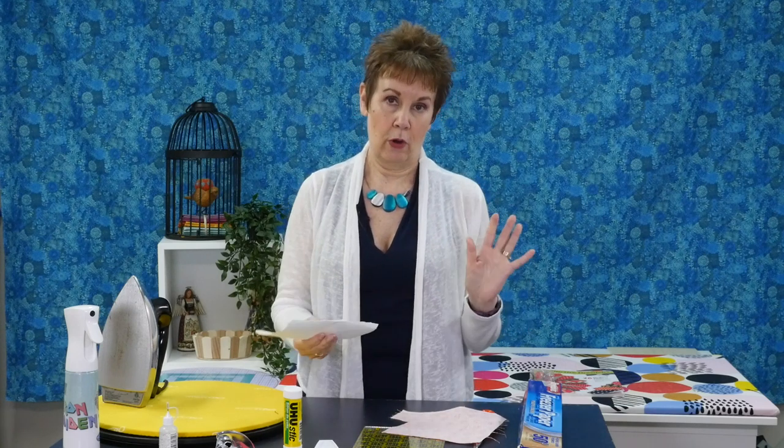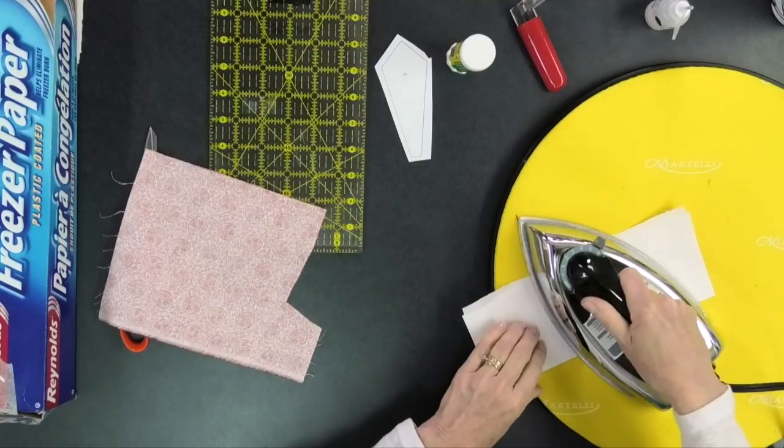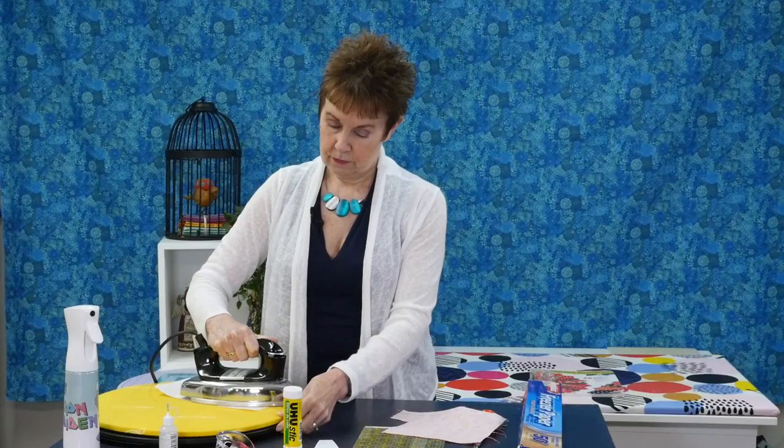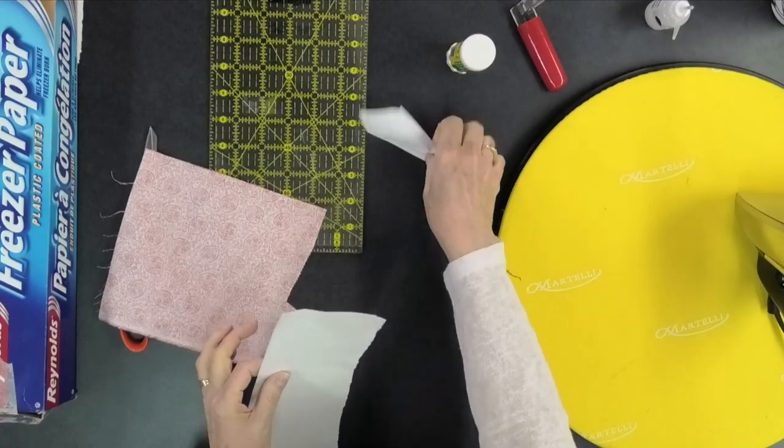I folded the freezer paper in half roughly. What I want is two pieces of freezer paper that have the shiny side together because I'm going to iron them with my dry iron and that's going to make them stick together. What this gives me is a real sturdy template once I put the little piece on it.